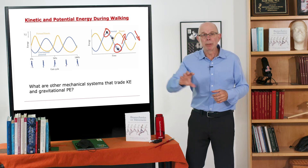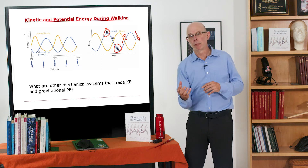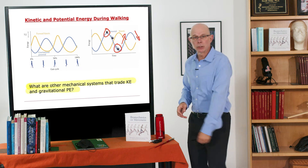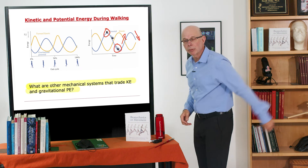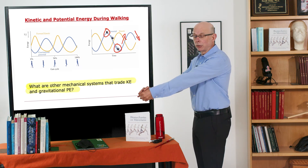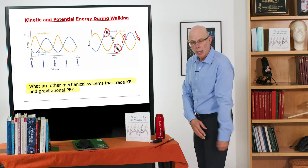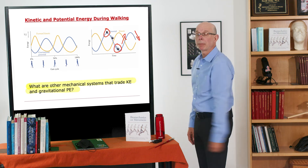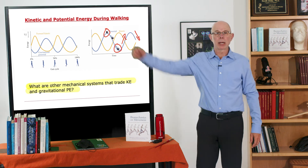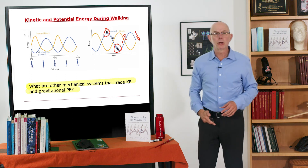A ball rolling up and down a hill is one system where gravitational potential energy and forward kinetic energy are traded, but there are others — a pendulum, for example. A pendulum swinging has zero kinetic energy at the top (zero velocity) and maximum kinetic energy at the bottom (lowest potential energy), and that keeps trading. Walking can be modeled as an inverted pendulum, which gives the same trade-off.